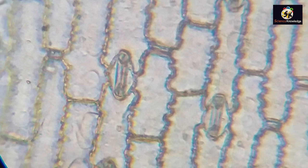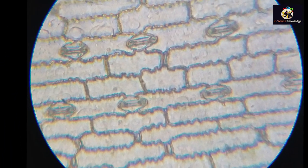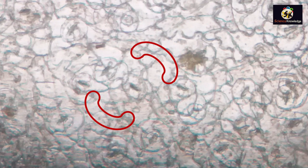In case of dicots the guard cells are kidney shaped or bean shaped. They are surrounded by subsidiary cells and epidermal cells. Note that the number of stomata may vary on upper surface as well as on lower surface.